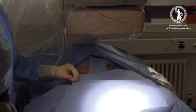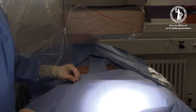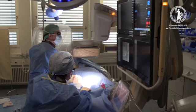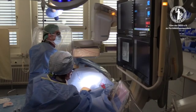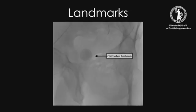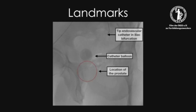With a four-French omniflush catheter, the aortic bifurcation can be crossed over from the right side to the left. Helpful landmarks are the balloon of the transurethral catheter and the tip of the endovascular catheter in the iliac bifurcation. The supposed location of the prostate is shown by the red circle.